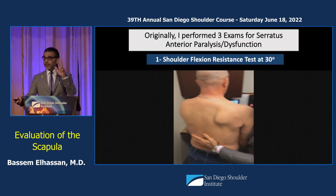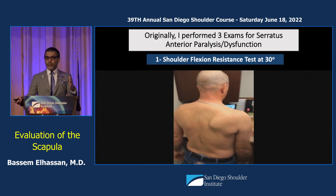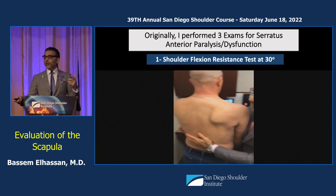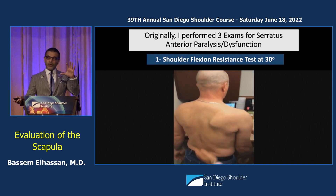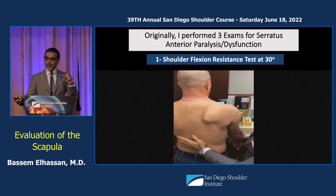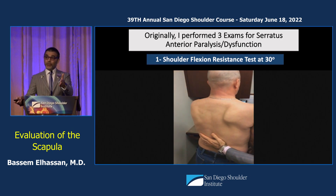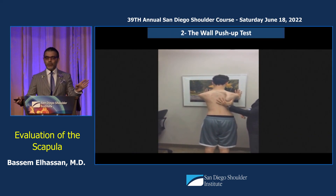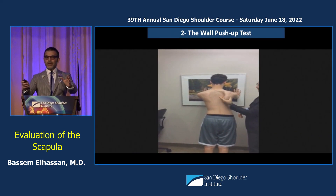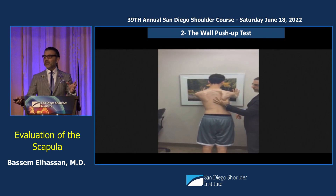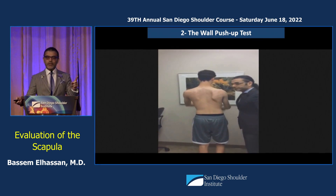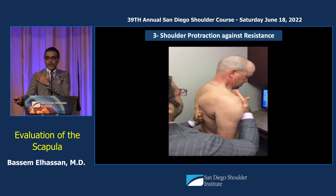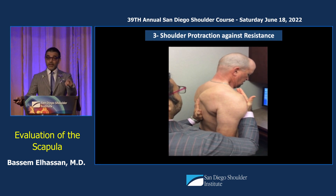With serratus paralysis, there are three exams. Number one: flexion at 30 degrees — it does wing the scapula off the chest for serratus paralysis, but it can also mimic pectoralis minor pathology. I thought this was an excellent test; I was mistaken. Push-up test — I don't do it anymore. I used to think anyone who wings on a wall push-up has serratus paralysis. That was wrong as well. The third one, protraction against resistance — where you resist the scapula against your hand — this is a good one.